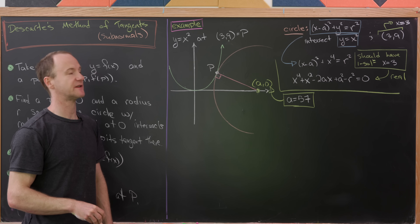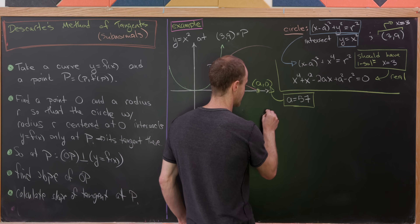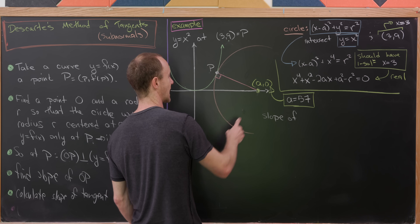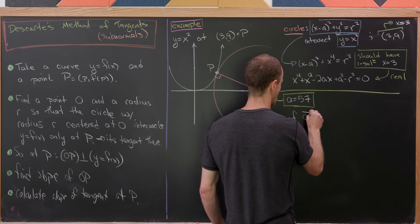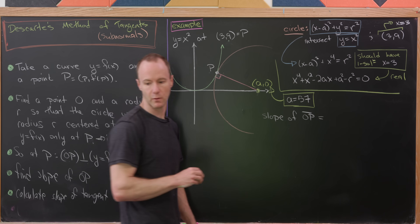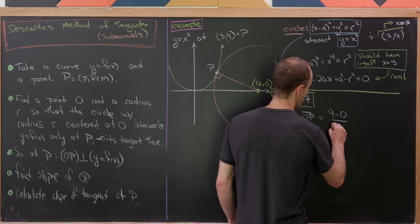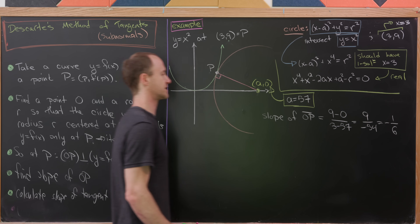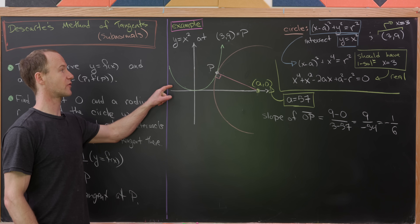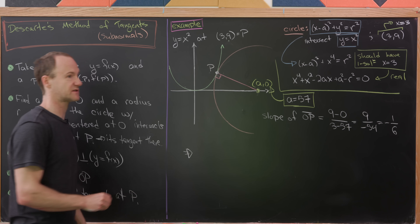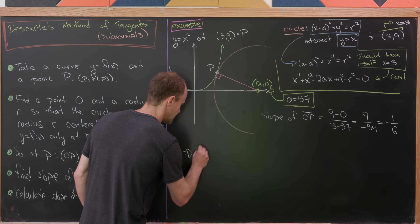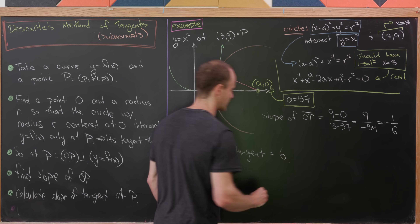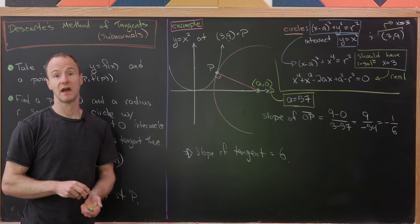We determined that A equals 57. Now let's find the slope of the line segment from O at (57, 0) to P at (3, 9). Using rise over run, we get (9 minus 0) over (3 minus 57), which is 9 over negative 54, or negative 1 over 6. We know that is orthogonal — perpendicular — to our curve. Taking the negative reciprocal gives us the slope of the tangent: the negative reciprocal of negative one-sixth is 6. That's exactly what we expected, and that's a good place to stop.